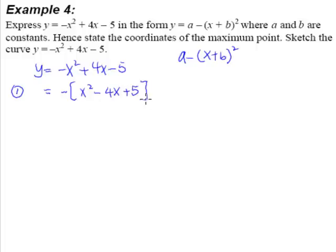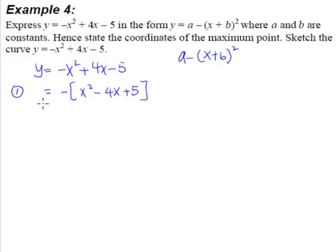It doesn't matter, because as long as you have a big bracket outside, you haven't done anything wrong. This equation is still the same as this equation — they are the same, you haven't changed anything. You merely put in a bracket. So this will be the first step of completing the square. Always remember to make the coefficient of x squared positive 1.